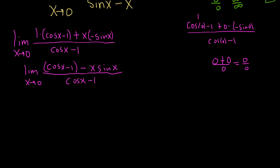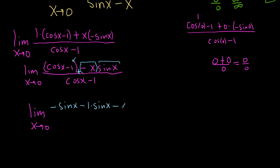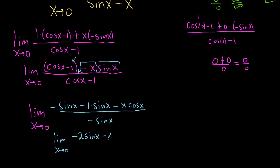When we take the product rule it's going to be a little tricky, so I'll go slow. This is the limit as x approaches 0. The derivative of cosine is negative sine, and the derivative of negative 1 goes away. We think of negative x as the first function and sine x as the second. The derivative of negative x is negative 1 times sine x, plus negative x times the derivative of sine which is cosine. All divided by the derivative of cosine, which is negative sine. Simplifying: negative sine x minus sine x is negative 2 sine x, and we have minus x cosine x over minus sine x.